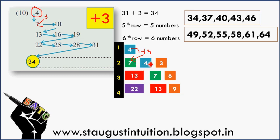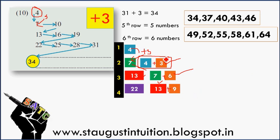The third row is 3. The third row starts at 7. The second row is 7. So we have 3 and 6 as differences.